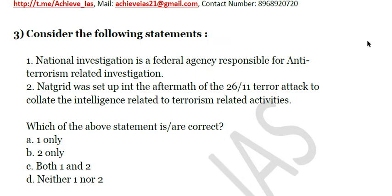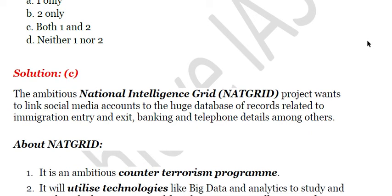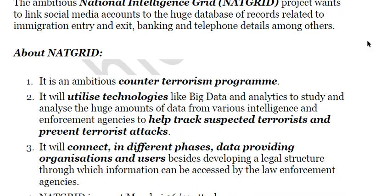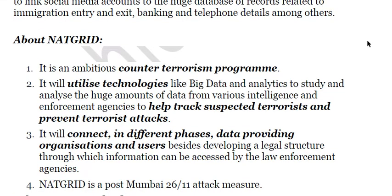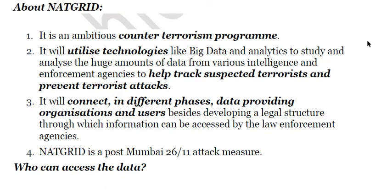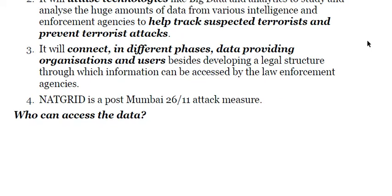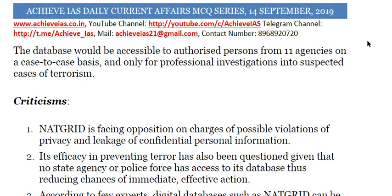The National Intelligence Grid project wants to link social media accounts to a huge database of records related to immigration, entry and exit, banking, and telephone details among others. NATGRID is basically a counter-terrorism program that utilizes technologies like big data and analytics to study and analyze huge amounts of data from various intelligence and law enforcement agencies to help track suspected terrorists and prevent attacks. The database would be accessible to authorized persons from 11 agencies on a case-to-case basis, only for professional investigations into suspected cases of terrorism.